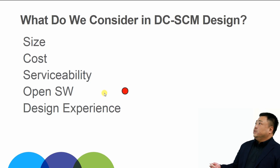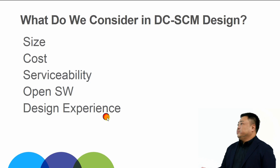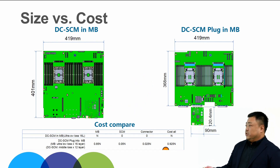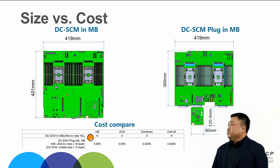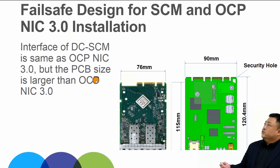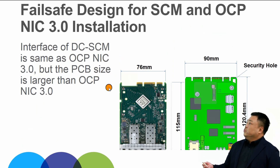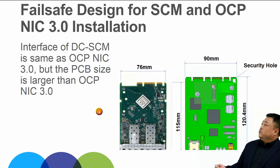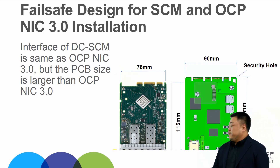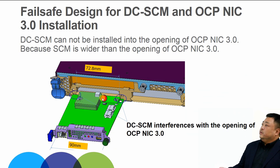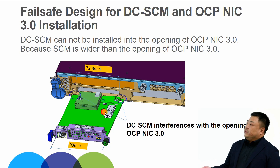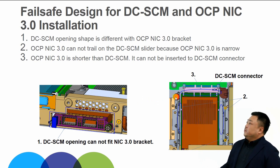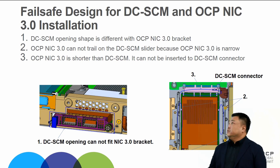What do we consider in SCM design? We consider size, cost, serviceability, open framework, and design experience. On size and cost: if we design with SCM, we can reduce around 10% PCB cost because high-speed PCB material is very expensive. Since the SCM and OCP-NIC card use the same connector, we need to avoid plugging an SCM into an OCP-NIC slot and vice versa. We designed both sides differently: the SCM card is wider than the OCP-NIC card so you cannot plug it into an OCP-NIC slot, and the SCM slot is longer so an OCP-NIC card cannot reach the SCM connector. This is our fail-safe design.